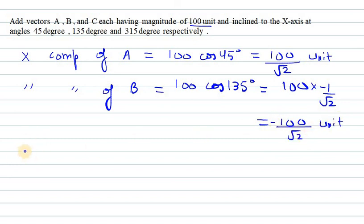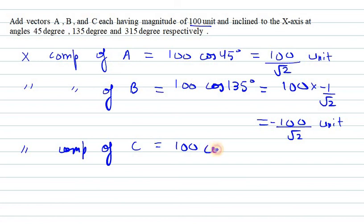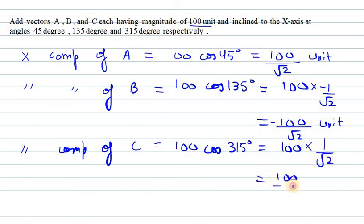Similarly, the x-component of C. With respect to C, we have 315°. Cos 315° gives 1/√2, so the x-component of C is 100/√2 units.